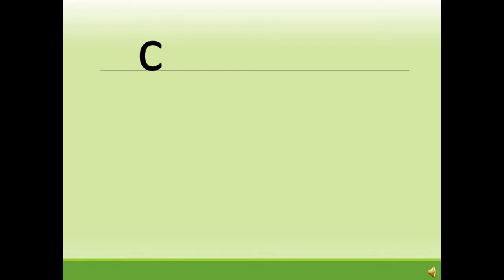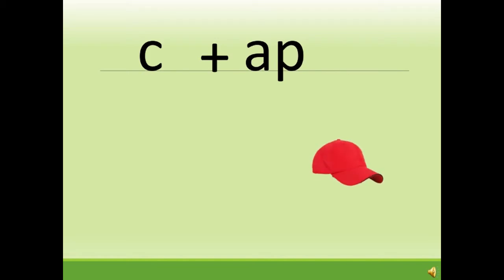Now let's make some words using the 'ap' family word. Can you see on the screen which letter can you see? Yes, letter C. And what sound does C make? C says 'c.' Correct. Now when we add 'ap' to C — C plus ap — what do we get? How do we read it? We read it as c-ap: cap, children.